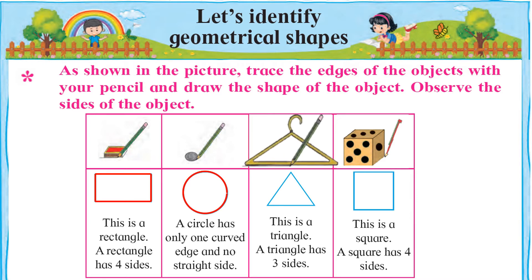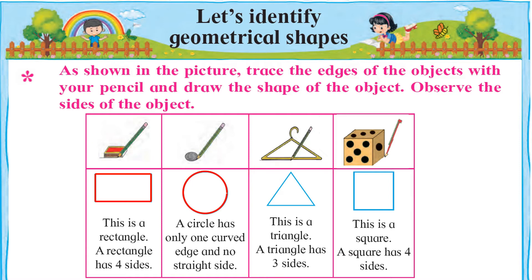Ab dekhte hain third picture — yeh hai hanger ki picture. Hanger ke edges yaani kinaaron par pencil pherne par aapko is tarah ka shape banta nazar aayega. This is a triangle — iska naam triangle hai, ise Urdu mein Musallas kehte hain. A triangle has three sides. Triangle ko three sides hote hain yaani teen baazu hote hain. Yeh hain triangle ke three sides.